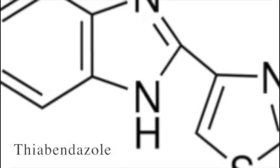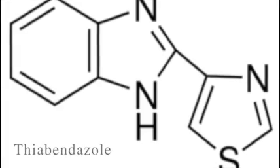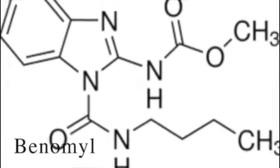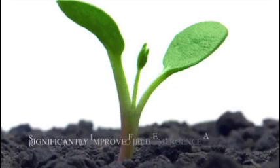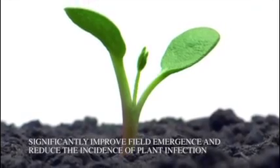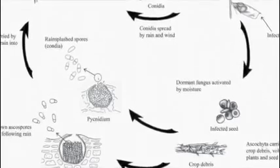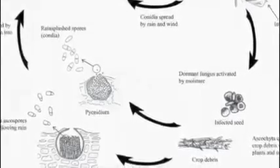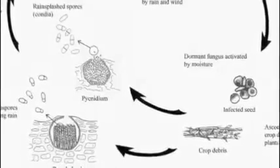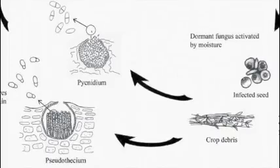Meanwhile, experiments also showed that using the combination of thiobendazole and benomyl to treat highly infected seeds could significantly improve field emergence and reduce the incidence of plant infection. The pathogen will go through a polycyclic life cycle by repeating the sporulation and dispersal of the conidial spores, causing them to spread in the field.